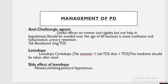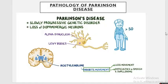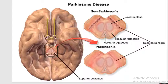The side effects of levodopa are nausea, vomiting, and postural hypotension. To summarize: in Parkinson's disease there is less dopamine and more acetylcholine, leading to less movement, difficulty in speech, and swallowing problems. This disease is a disease of the midbrain — specifically, the substantia nigra cells are destroyed.